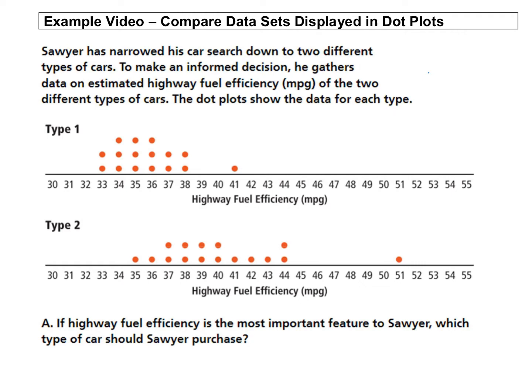The dot plots show the data for each type. So what this is showing is how many miles each car can get per gallon in miles per gallon. So the two dot plots we can see visually look different. In type one, we see there's kind of a cluster between 33 and 38.